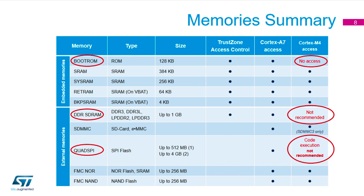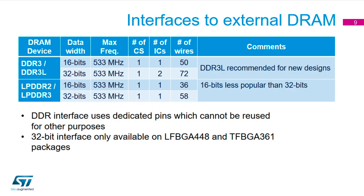Other memory interfaces include MMC, Quad SPI, and the external memory bus FMC for NOR and NAND flash. These can be used by any core, but executing code from Quad SPI on the M4 is not recommended as it slows A7 performance if both cores share that interface. Regarding DDR bus width: the two larger pin-count packages support a 32-bit DDR interface, while the two smaller packages are limited to a 16-bit DDR interface.